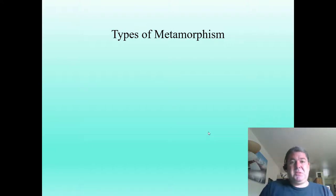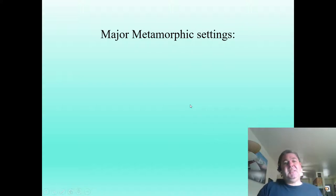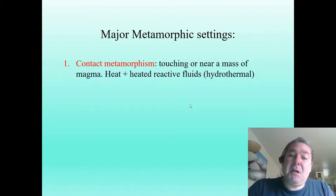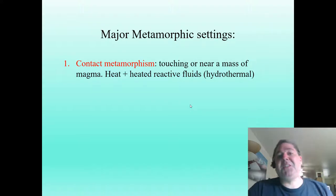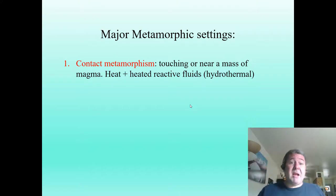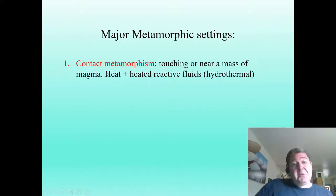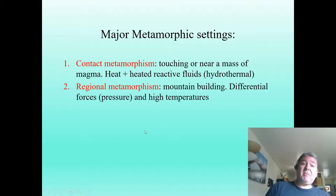In this video, we're going to talk about the two different types of metamorphism. Let's look at these in their major metamorphic settings. First, we have contact metamorphism. This is metamorphism that occurs because rock is touching or near a mass of magma. Heat and hydrothermal fluids are the two most important agents in contact metamorphism.